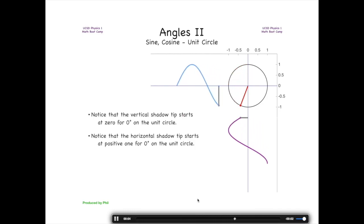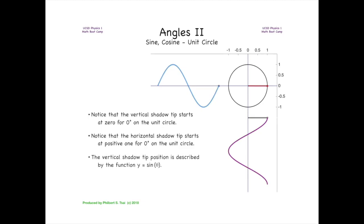As we trace these out, you see that the vertical and horizontal shadows trace out a sinusoidal curve. The vertical shadow tip is described by the function y is equal to sine of the angle theta, while the horizontal shadow is described by y is equal to cosine of the angle theta.